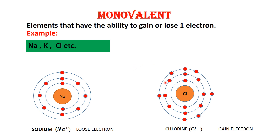Chlorine is also a monovalent atom because it has the ability to gain one electron. The outermost shell of the chlorine atom has seven electrons. In order to complete its octet state, it needs to gain one more electron. The chlorine atom gains one electron, so it is negatively charged. The sodium atom is losing one electron, so the number of protons will be more than the electrons, making sodium positively charged. But both sodium and chlorine are monovalent because sodium has the ability to lose one electron and chlorine has the ability to gain one electron.